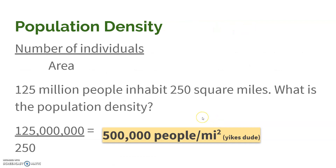Population density tells us about living conditions. You take the number of individuals, divide by the area, and make sure to include the unit. For example, if 125 million people inhabit 250 square miles, the population density would be 500,000 people per square mile — which is extremely unrealistic, but the math works the same way. If you get a number like that on a real question, you probably did something wrong, because College Board won't put an unrealistic question, but this example does anyway.